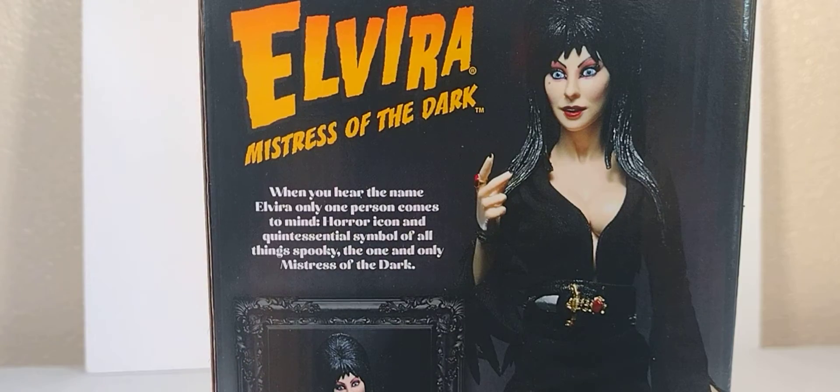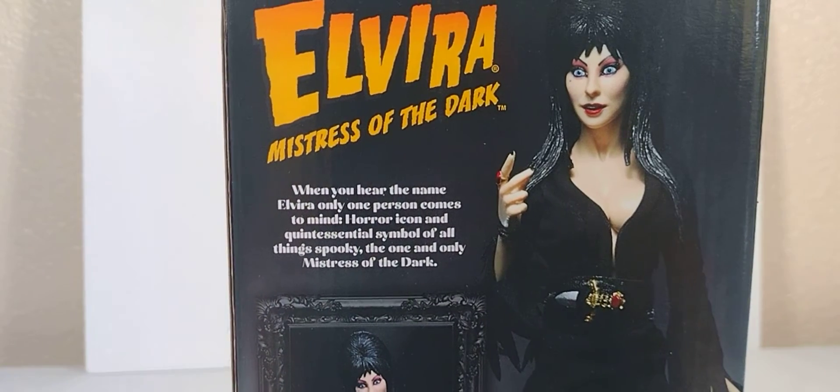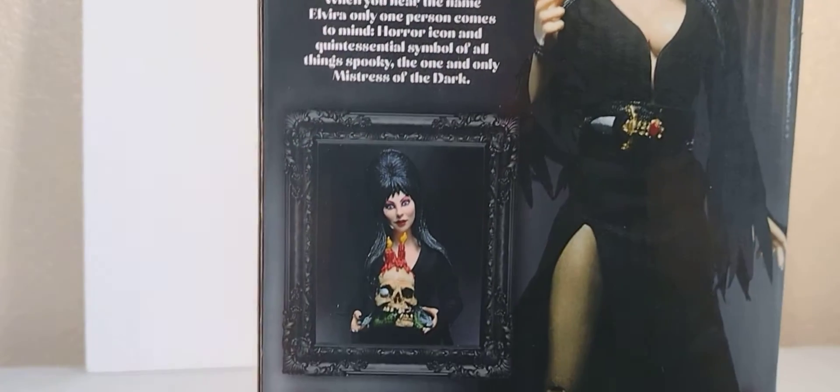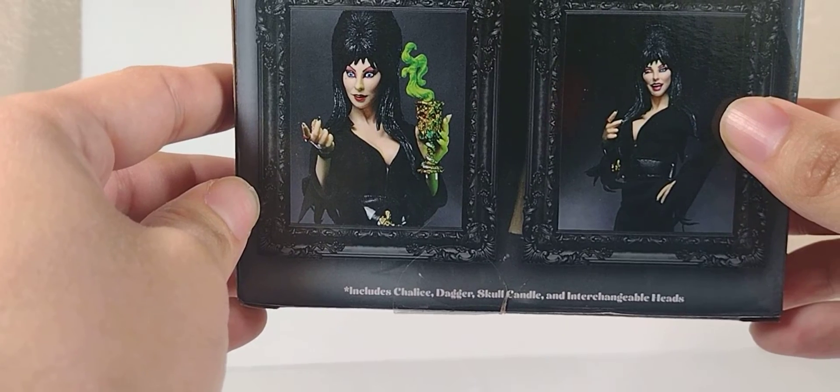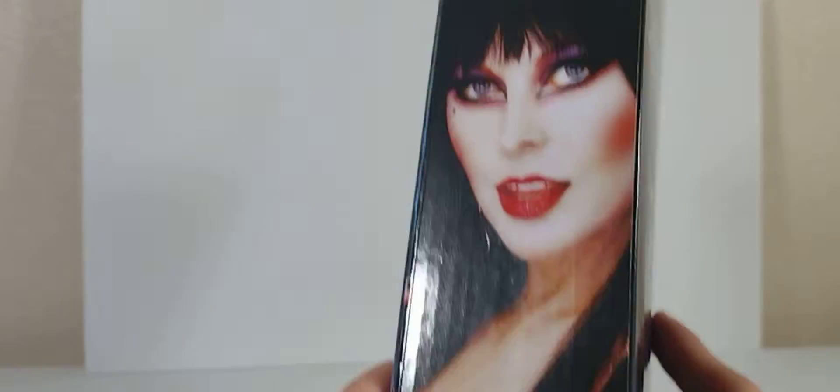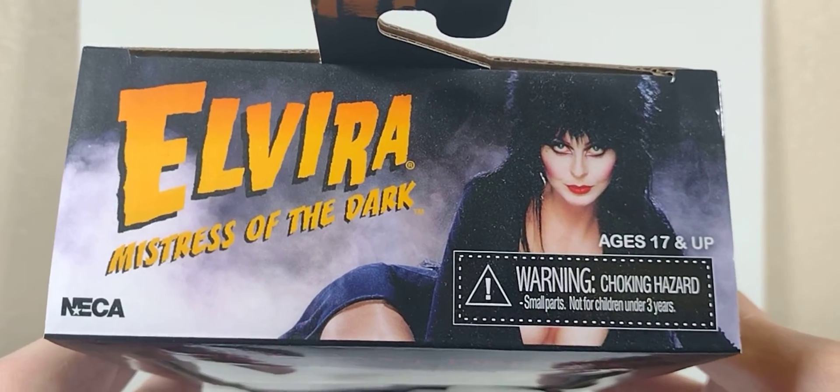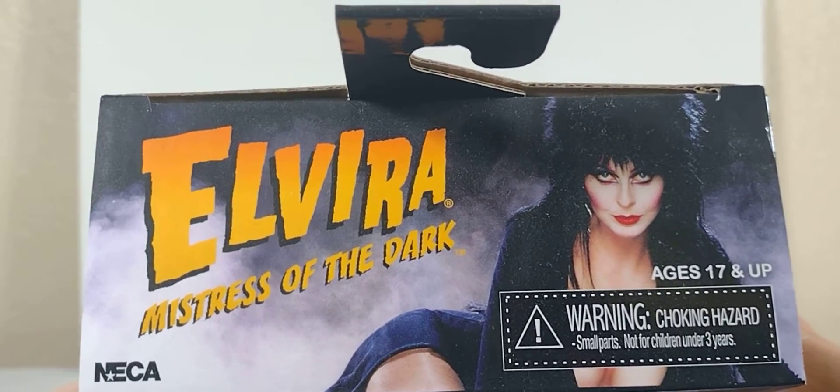It says Elvira Mistress of the Dark, got a picture of Elvira herself, NECA logo, picture of the figure on the back. On the back says Elvira Mistress of the Dark with a quick bio if you want to pause it. Picture of the figure itself, got the knife in the holster, a couple pictures of what she comes with. Includes chalice, dagger, skull candle, and interchangeable heads. On the side, picture of Elvira with the winky face. Nothing at the bottom. Top says Elvira Mistress of the Dark, warning choking hazard ages 17 and up.